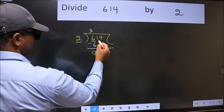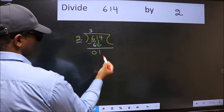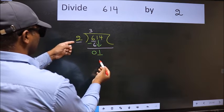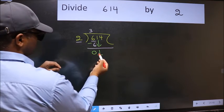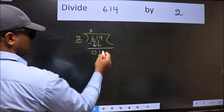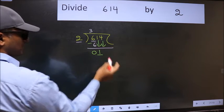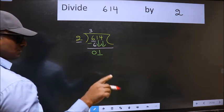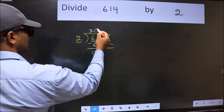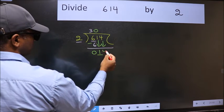After this, bring down the beside number. So 1 comes down. Now here we have 1 and here 2. 1 is smaller than 2, so we should bring down the second number. The rule to bring down the second number is we should put 0 here. Then only we can bring down this number.